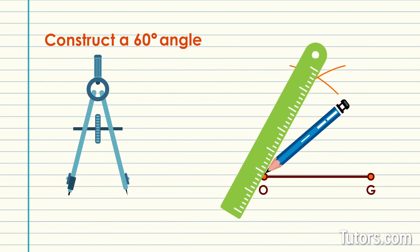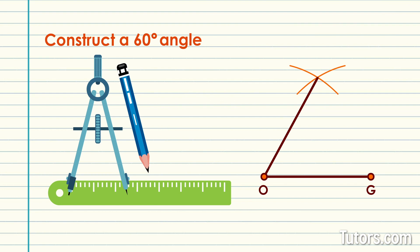Use the straight edge to construct a line segment from point O up to the point of intersection of the two arcs. Label the new line segment's endpoint point D. The angle created from point D to O to G by striking three congruent lengths is 60 degrees.